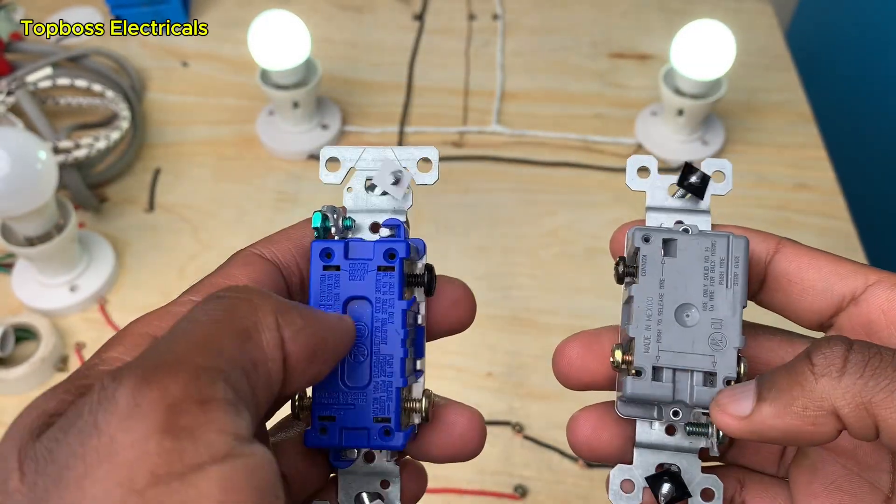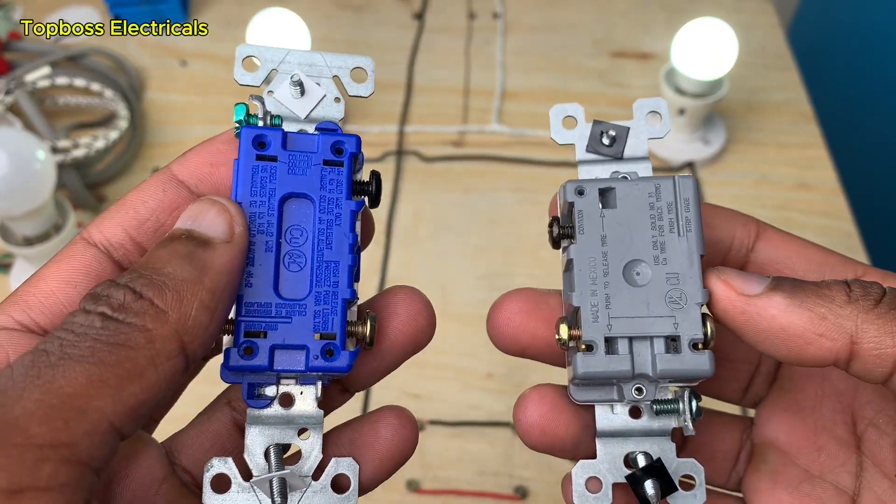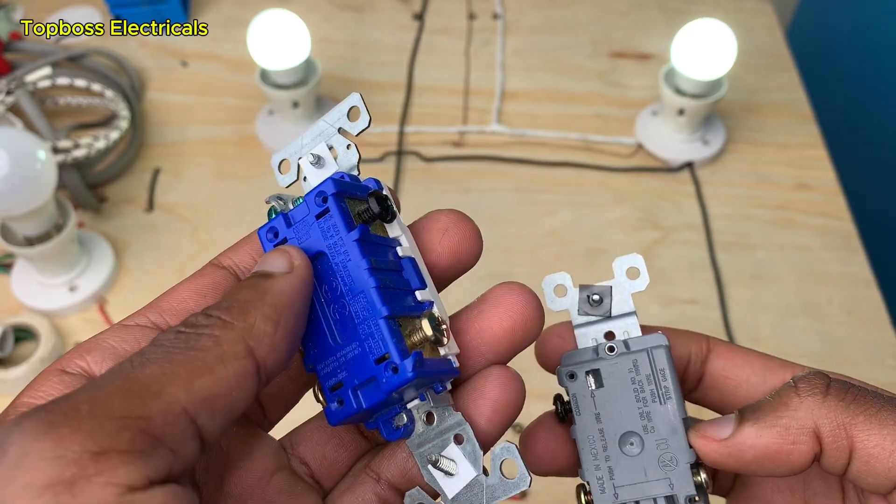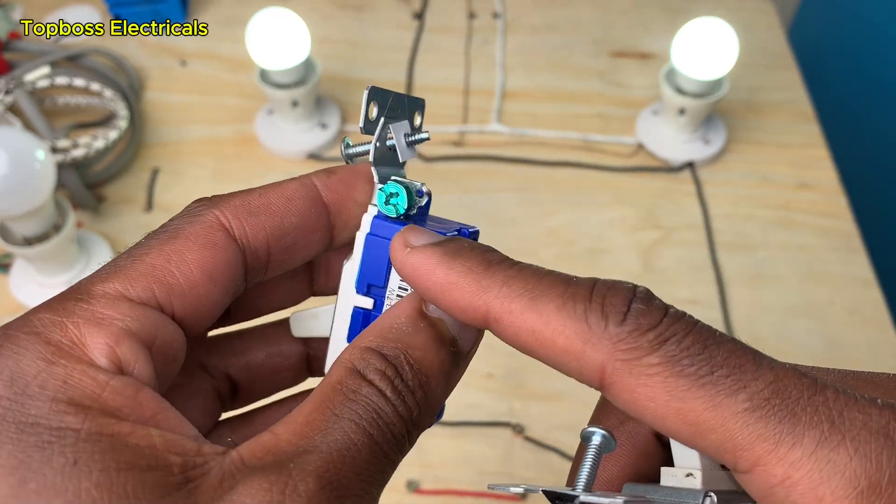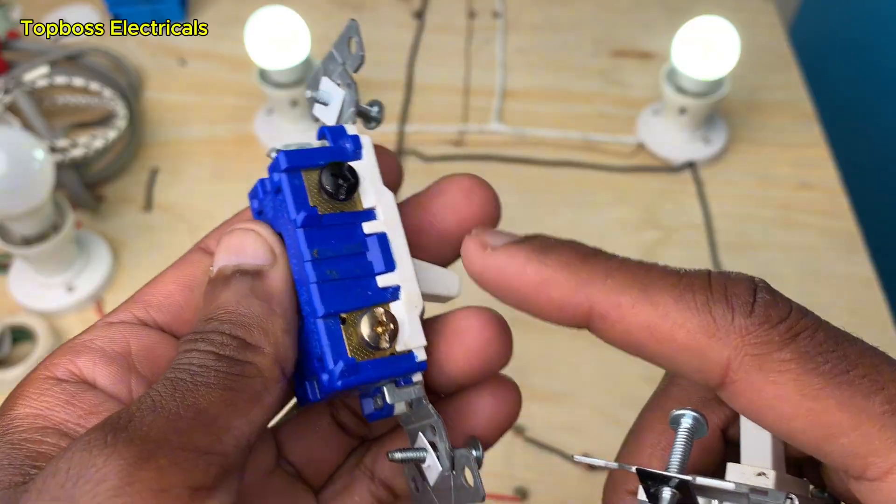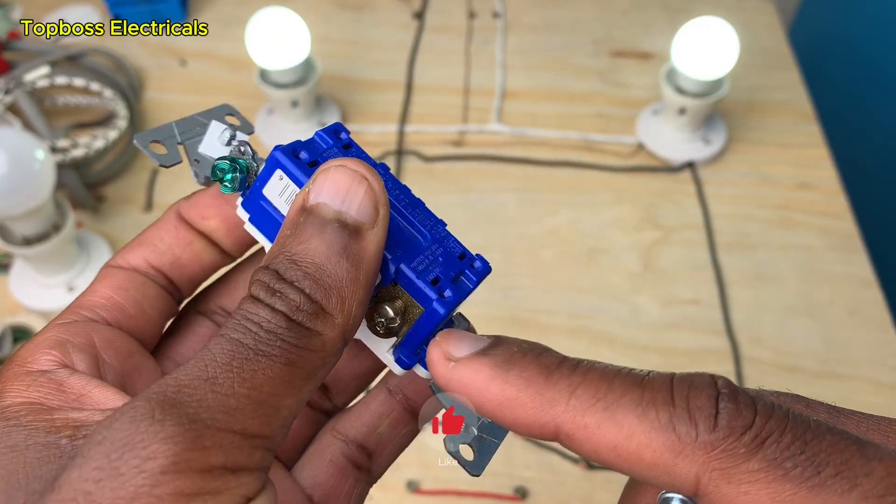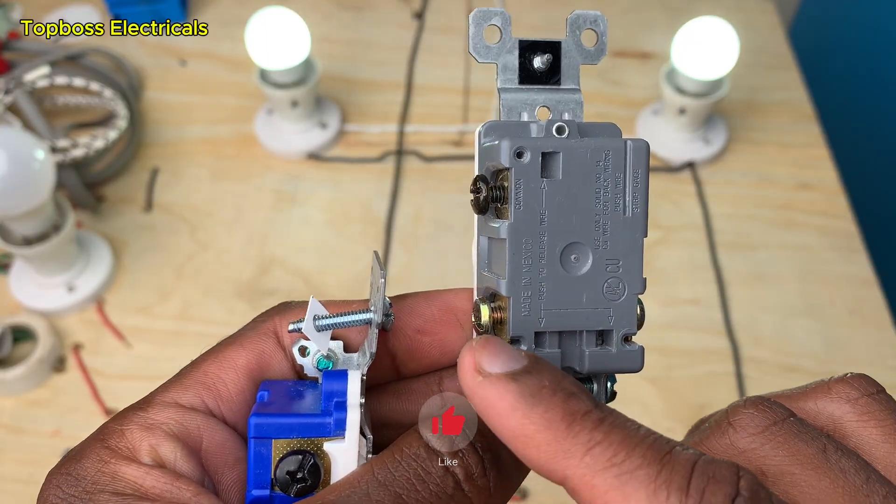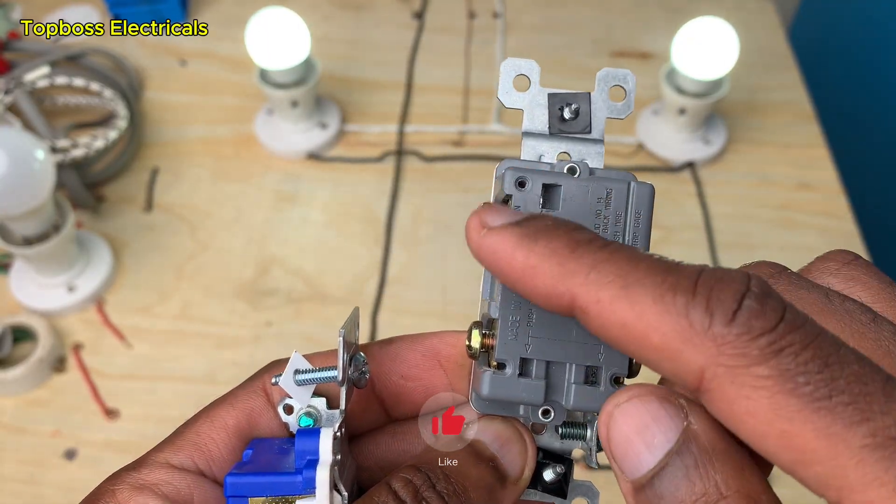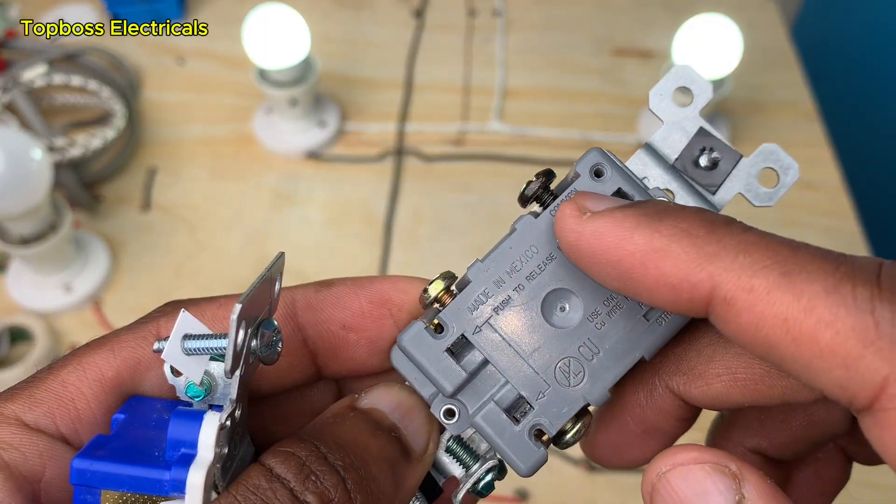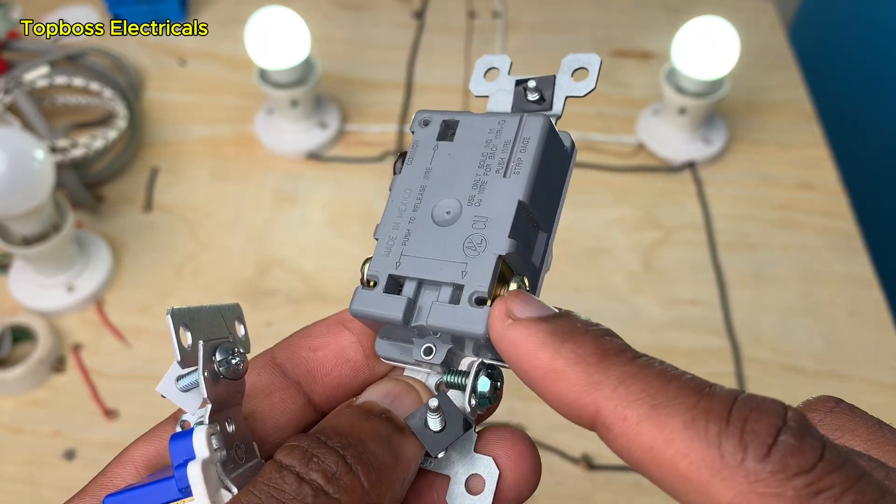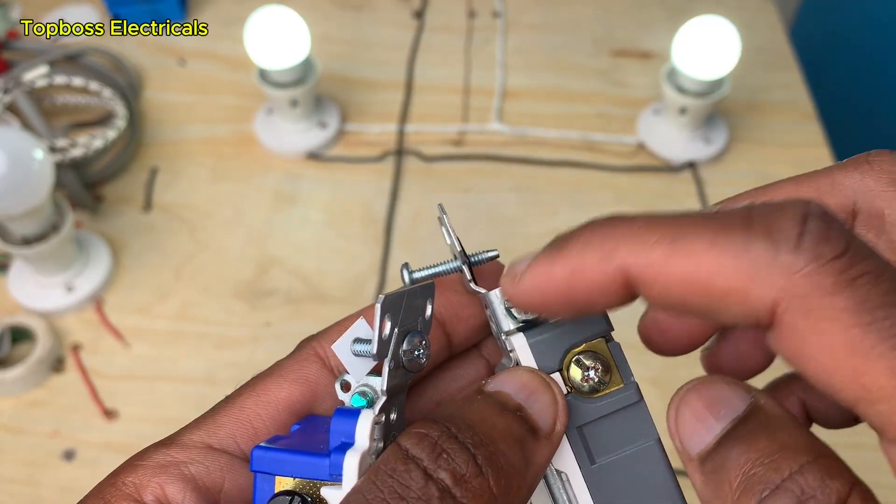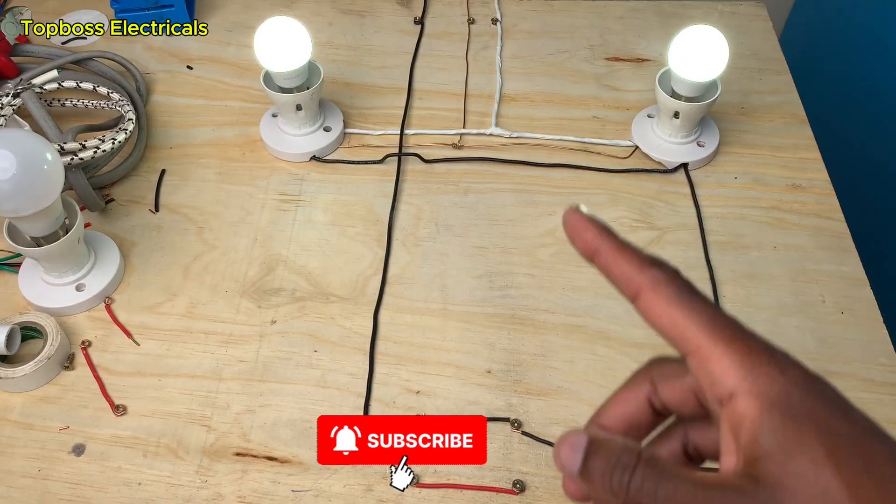These switches have four distinct connections. First we have the ground, we have the common, and we have these gold screws here. We also have a replica of that in the second switch where we have the common here as indicated, then we have these two golden screws, and our ground where our ground wire is connected.